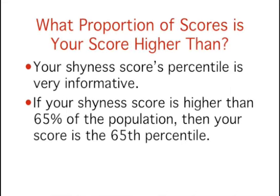If your score of 35 was higher than 99% of the population, then you would be one of the shyest people around. On the other hand, if your score was higher than only 1% of the population, then you would be one of the least shy.